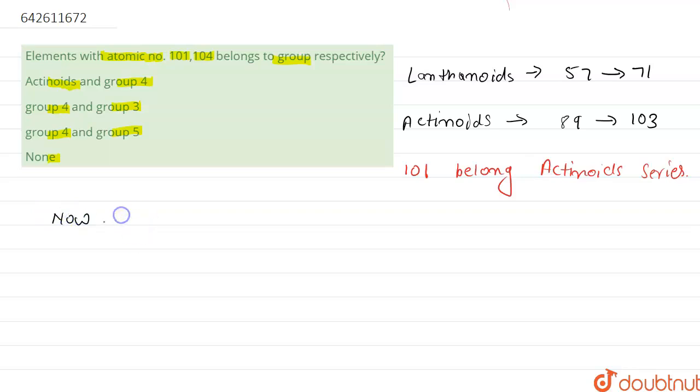Now we will proceed for element having atomic number 104. We know that group 18 contains noble gases which are helium, neon, argon, krypton, xenon and radon.